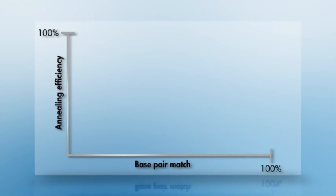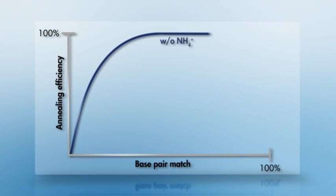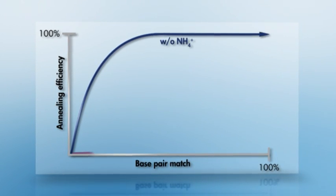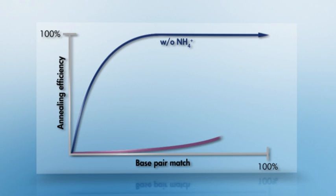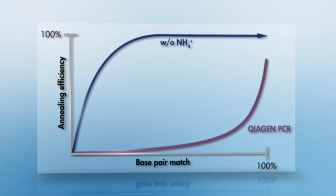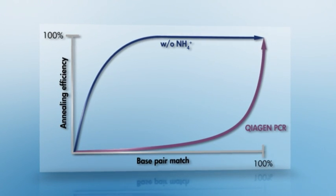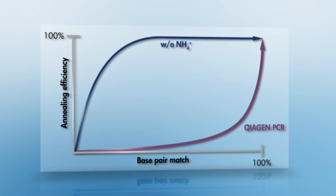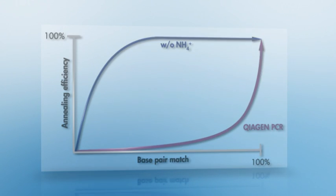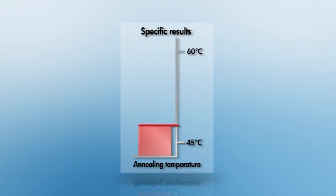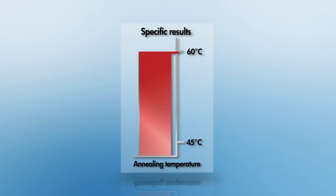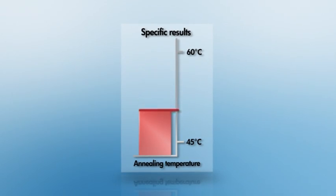Standard PCR buffers that do not contain ammonium ions stabilize both specific and nonspecific primer annealing. Due to the dual cationic effect of QIAGEN's PCR buffer, annealing efficiency is only high with a 100% base pair match between the primer and the template. This effect and the resulting specificity is also independent of the annealing temperature chosen.